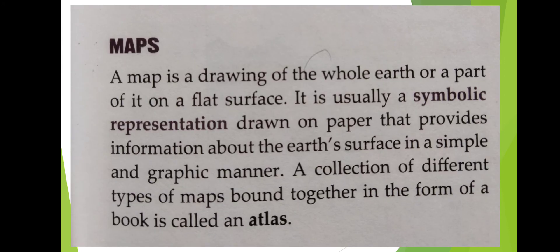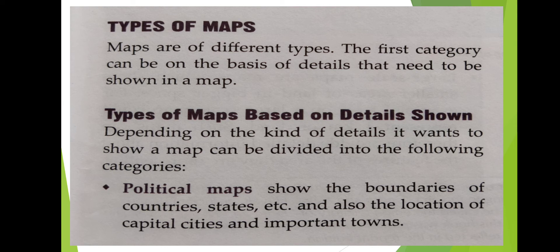Now we come to the types of maps. The first category is based on the details that need to be shown. Depending on the kind of details it wants to show, a map can be divided into the following categories. The first one is political maps. The political map shows the boundaries — the maps that show different countries of the world along with their states, national and international boundaries, political units and administrative divisions are called political maps.